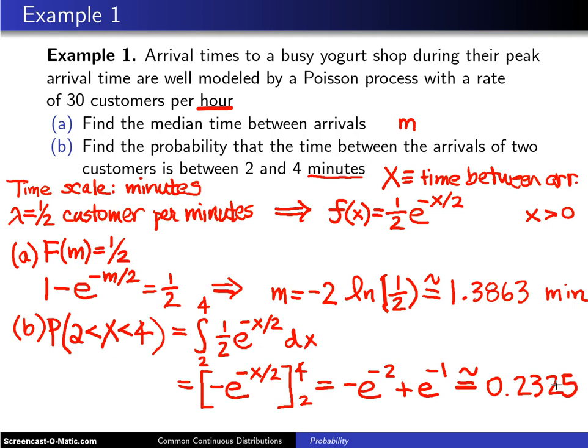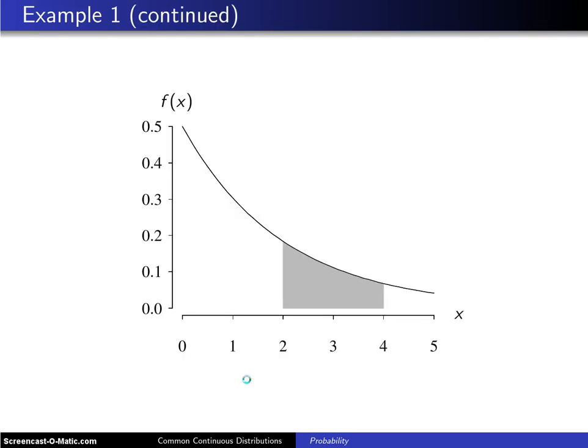Now on the next slide you'll be able to see the geometry behind the solutions to part a and b. So first of all, if you look at part b, here is the shaded area between two and four, and the integral that we just worked showed that this was about 0.2325 as the area underneath the curve.